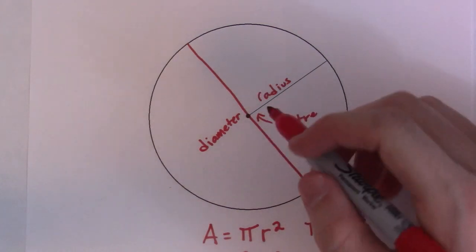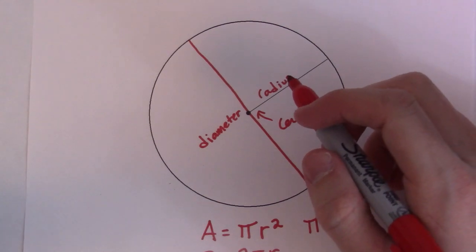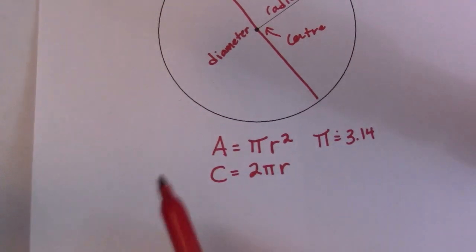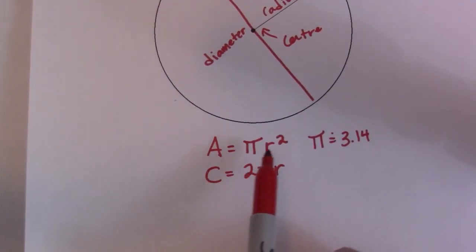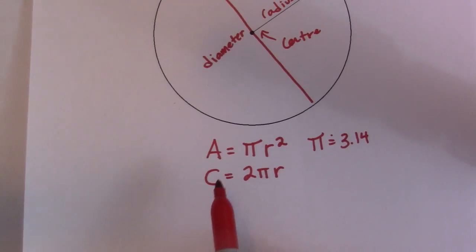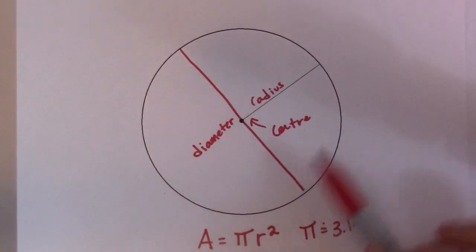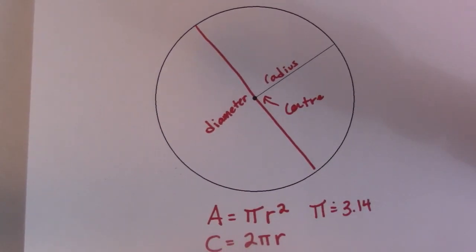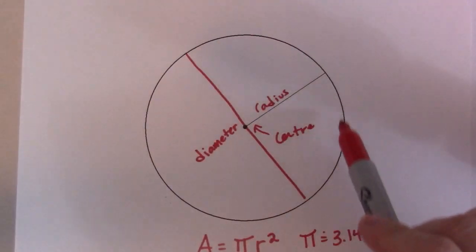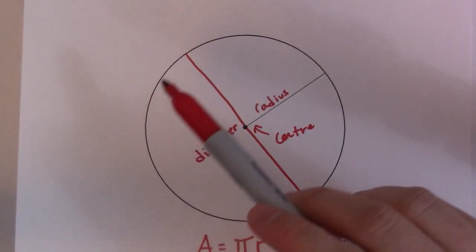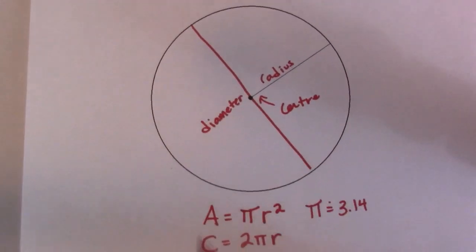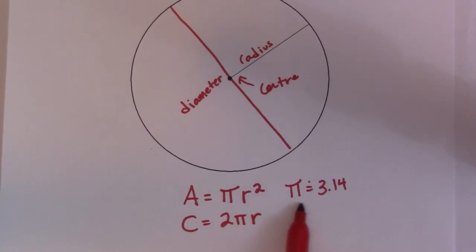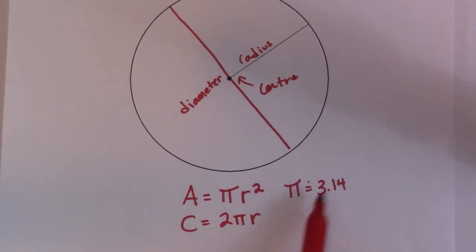So a couple of other formulas that you might need to be familiar with if you're doing a circle geometry unit is the area of a circle, which is π r squared, and the circumference of a circle. The area obviously is all this shaded in part, if I shaded it. The circumference is the actual perimeter of the circle - the distance all the way around, which would be in centimeters or whatever. And that's 2π r.